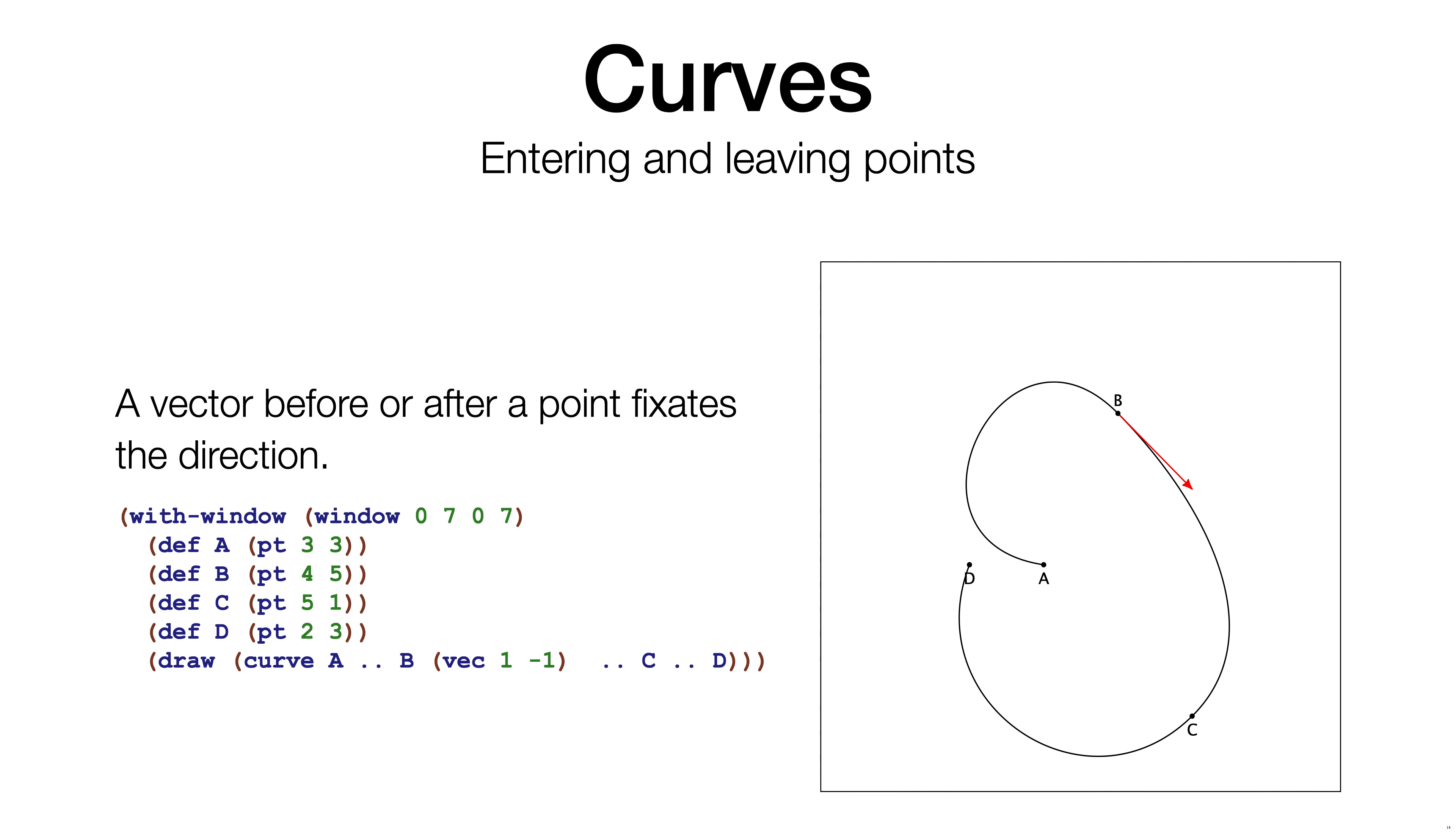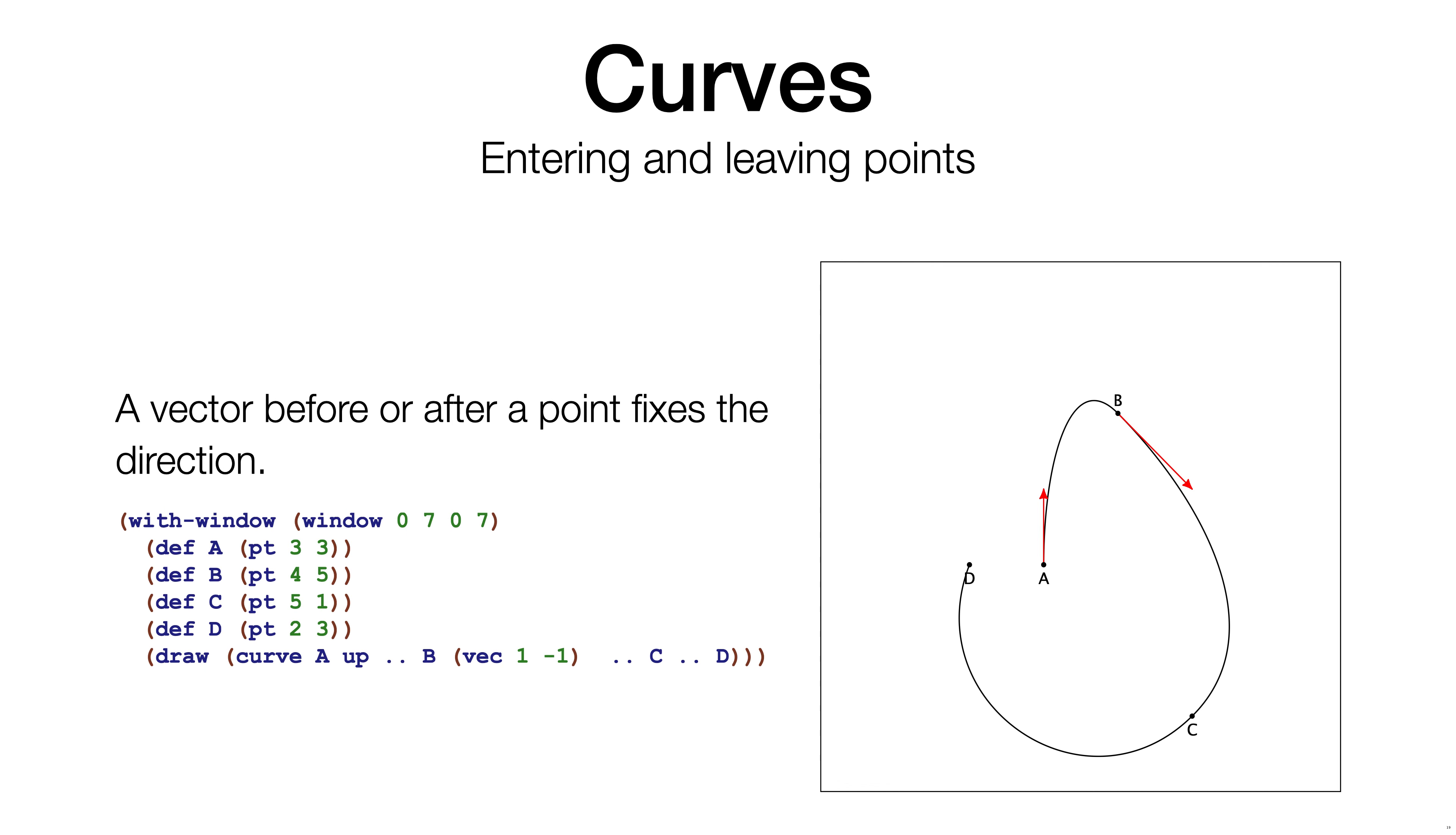The vector shows the direction in which the curve exits the point. So if you look at the figure, you can see that the red vector here is tangent to the curve. So this time the curve starts from A, goes straight up over to B, exits B in the direction 1, minus 1, continues to C, and ends in D.